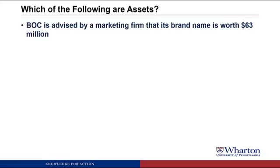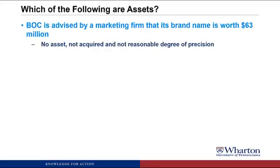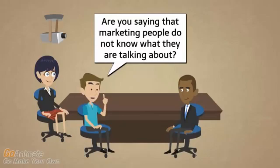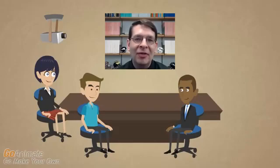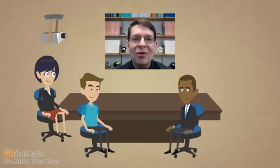BOC is advised by a marketing firm that its brand name is worth $63 million. This would not be an asset because we never acquired it in a past transaction or exchange, and the value of the brand cannot be measured with a reasonable degree of precision — so it doesn't meet either criteria. Accountants have decided to err on the side of reliability and objectivity. Without a market transaction, we can't be sure how much it's worth, so we leave it off the financial statements. This is why a company's stock market value is often greater than its book value.